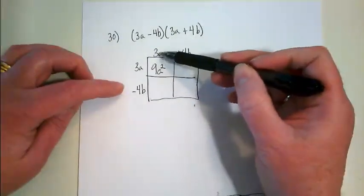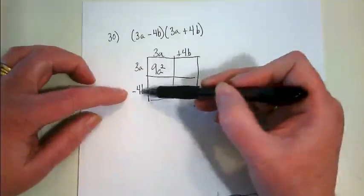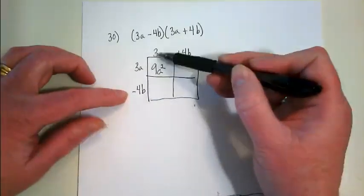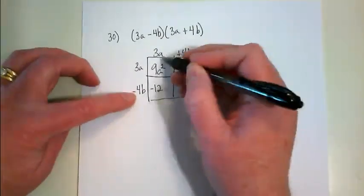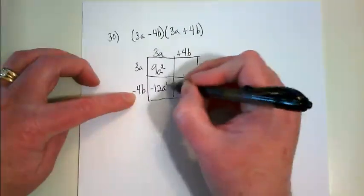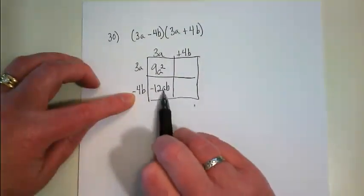And then 3 times 3a, or 3 times a, times negative 4 times b, I get the coefficients give me negative 12, and a times b gives me ab. So this reads negative 12 times a times b.